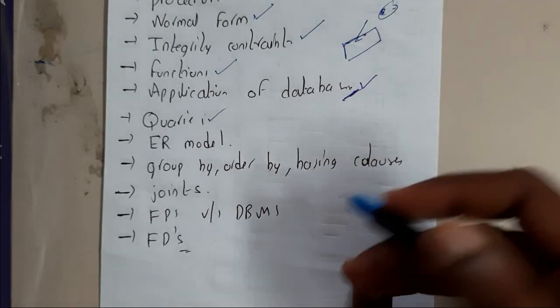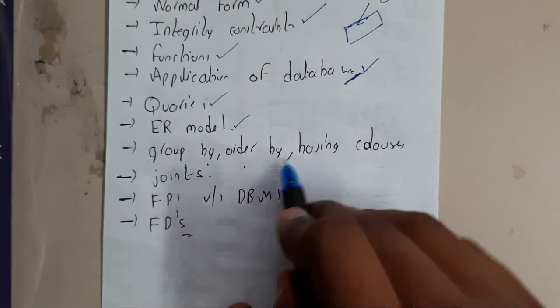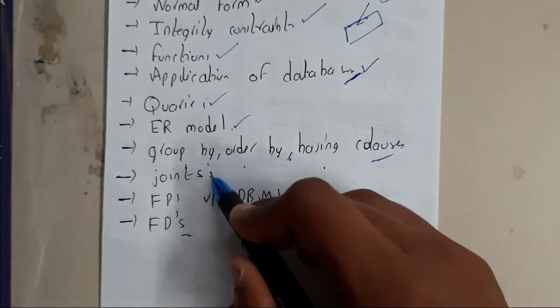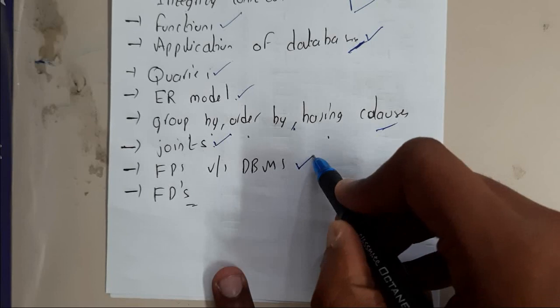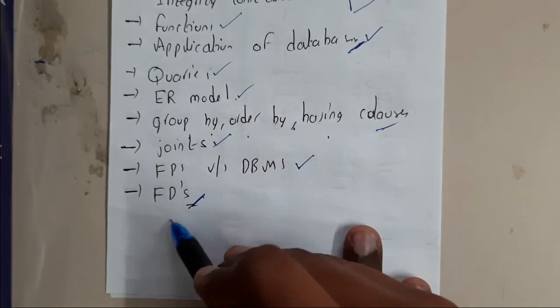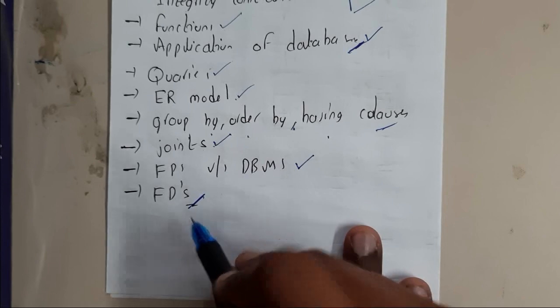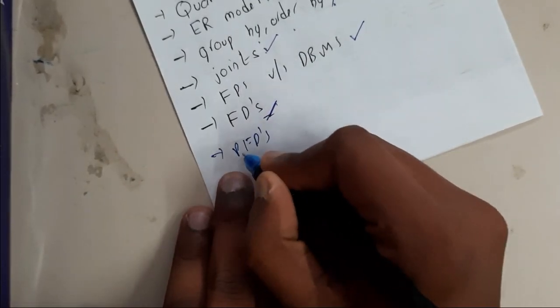Then ER models and things about GROUP BY, ORDER BY, HAVING clauses, and joins. Differences between file management system and database, and FDs. Even in some papers we have problems on FDs also, so he's asked the theory and problems.